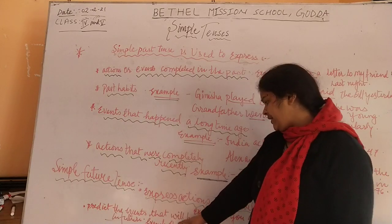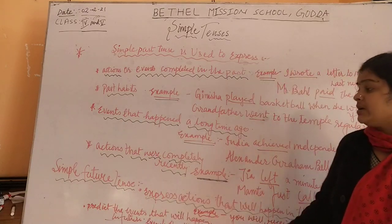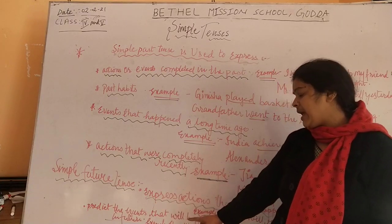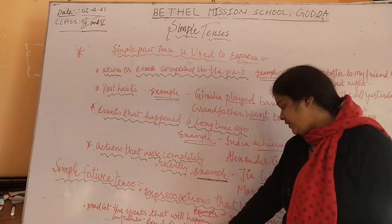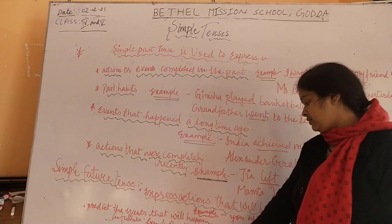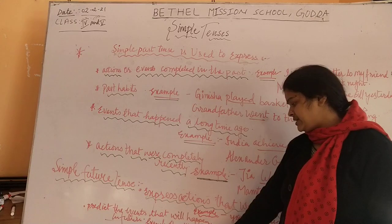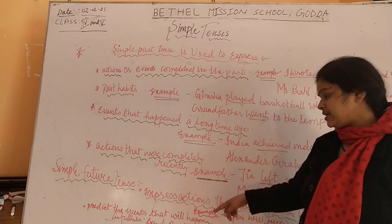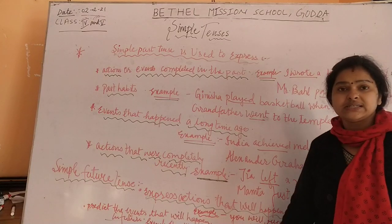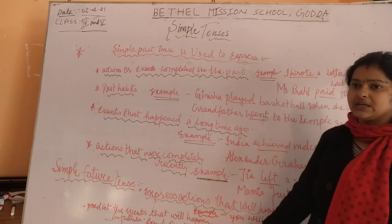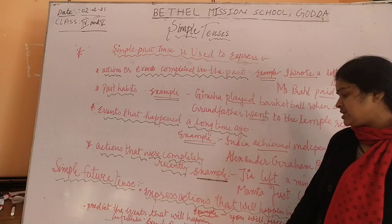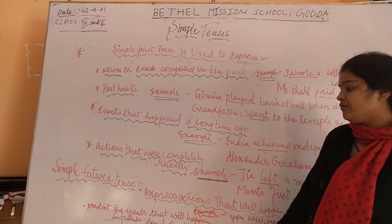Future tense is also used to predict events that will happen in the future. For example, it will rain tonight — there is a chance of rain tonight, and 'will rain' shows that things will happen in the near future. Second: Rashi will top the class — she is doing hard work and she will top the class, which is a future tense sentence. These two sentences show that things will happen in the future.